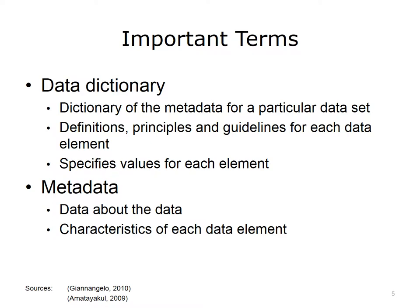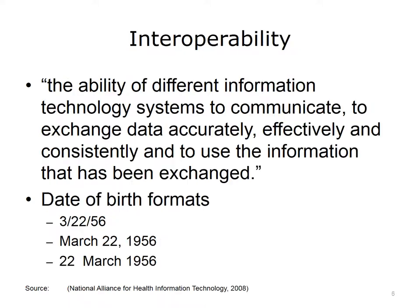In addition to using standardized terminologies so that all users understand what the data mean, different systems need to be able to technically exchange data. For instance, if a hospital wanted to access the data from the records of a patient's primary care physician. In order to be able to exchange data, the two information systems need to be what is known as interoperable. According to the National Alliance for Health Information Technology, interoperability is defined as the ability of different information technology systems to communicate, to exchange data accurately, effectively, and consistently, and to use the information that has been exchanged. Two key elements of this definition are exchange and use.